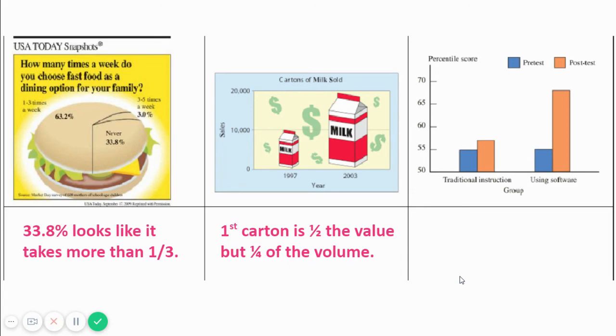However, another reason that this is a bad representation of the data is that they intend for the small carton on the left to represent half of the large carton on the right. This says it's a quarter of the volume. I think it's closer to an eighth of the volume. But that's a significant distortion of the data.